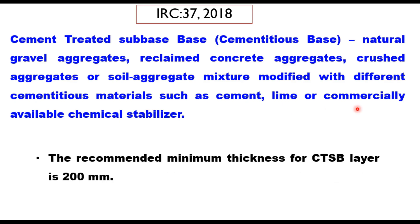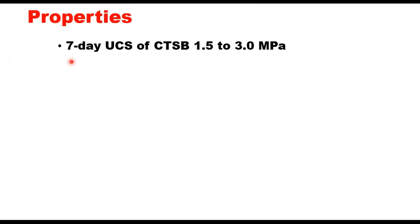The recommended minimum thickness of the CTSB layer is 200 mm. The strength of the CTSB layer is measured in terms of seven-day UCS (unconfined compressive strength) or cube strength, and this value should be 1.5 to 3 MPa. Design of flexible pavement as per IRC 37 requires a modulus value for each layer.